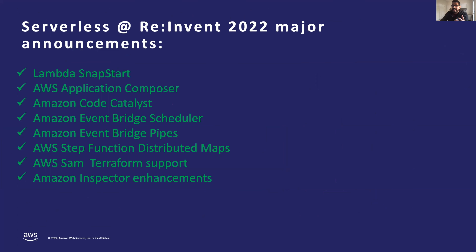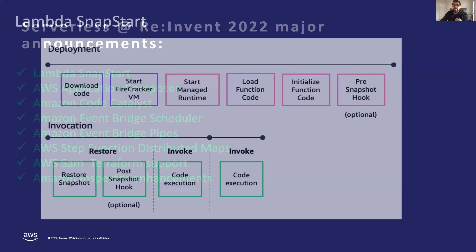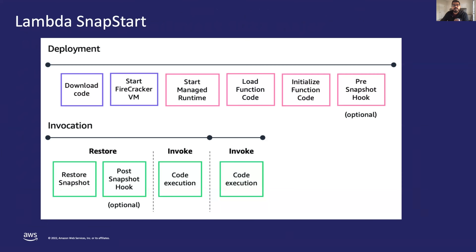Now I will discuss some of the great announcements coming from re:Invent 2022 in the serverless space. First, Lambda SnapStart. We often hear about Lambda startup latency or cold start time — the time Lambda spends initializing the function, including loading function code, starting the runtime engine, and initializing the function startup code. Lambda SnapStart for Java can improve startup performance for latency-sensitive applications by up to 10x at no extra cost, typically with no changes to your function code.